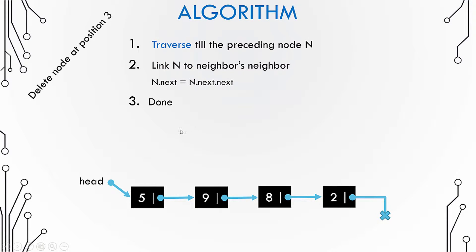In this example, we will delete the node at position number 3, which means that we will delete the node with the value 8.